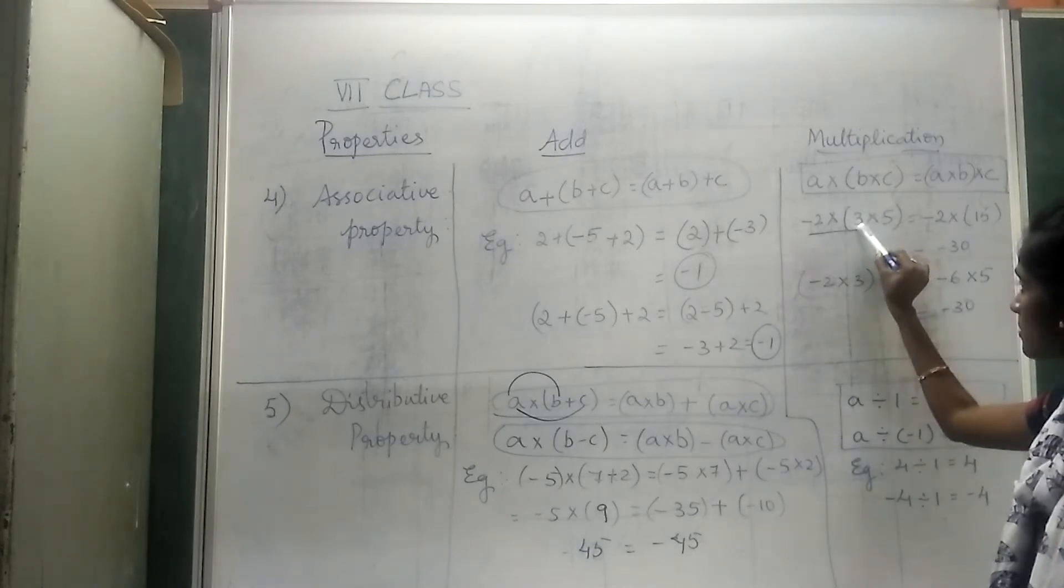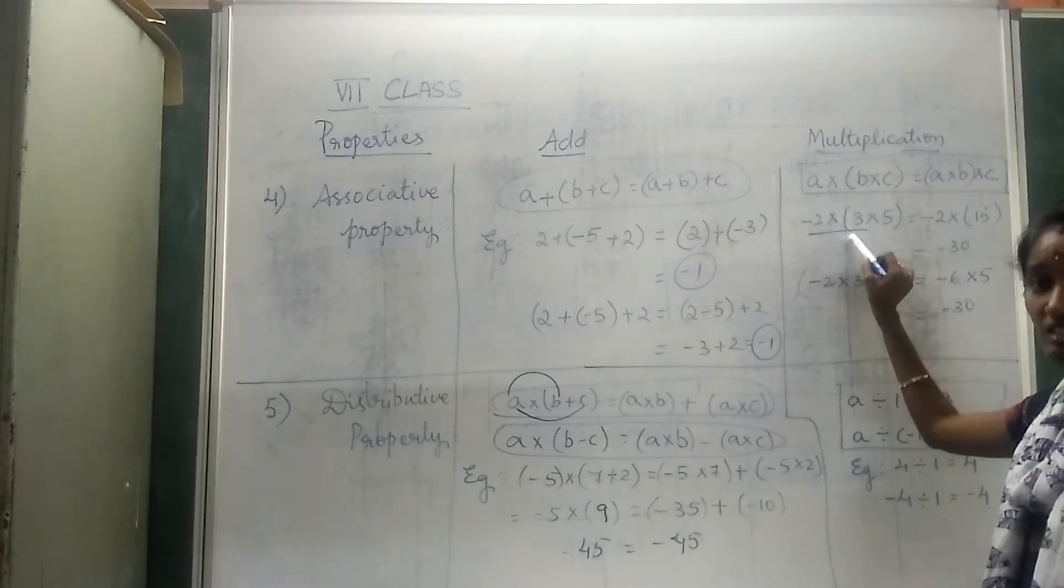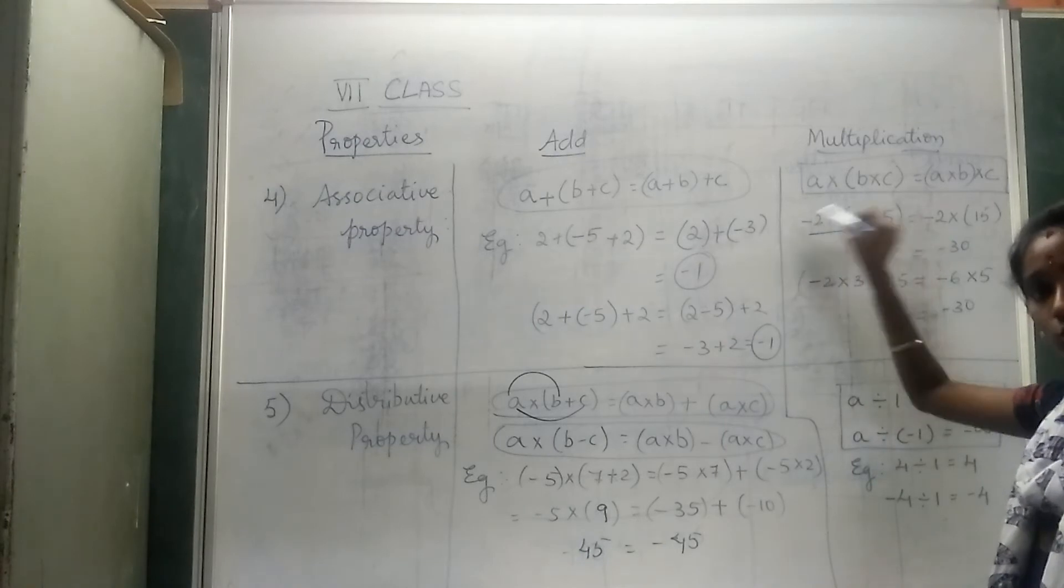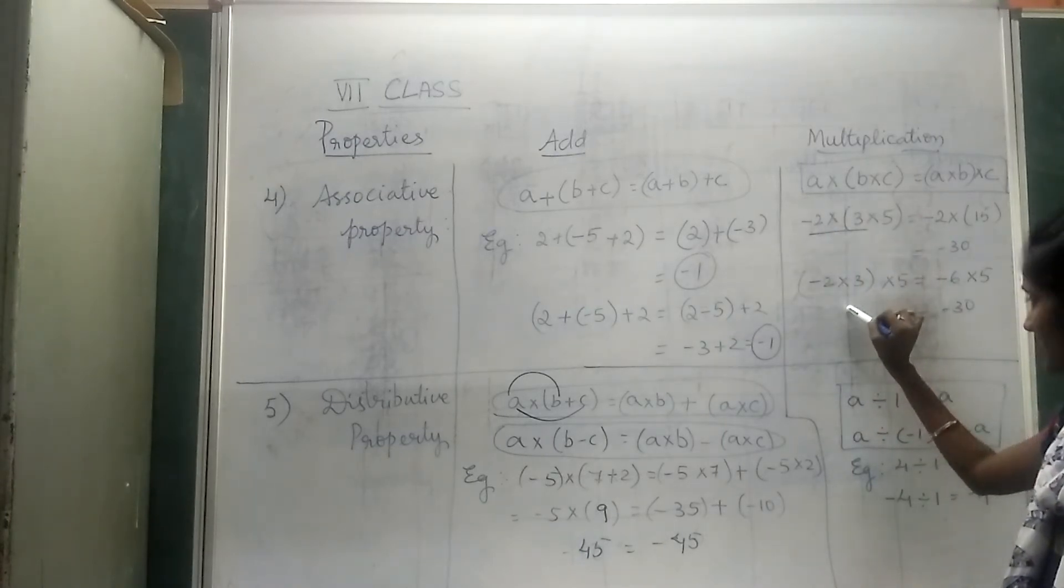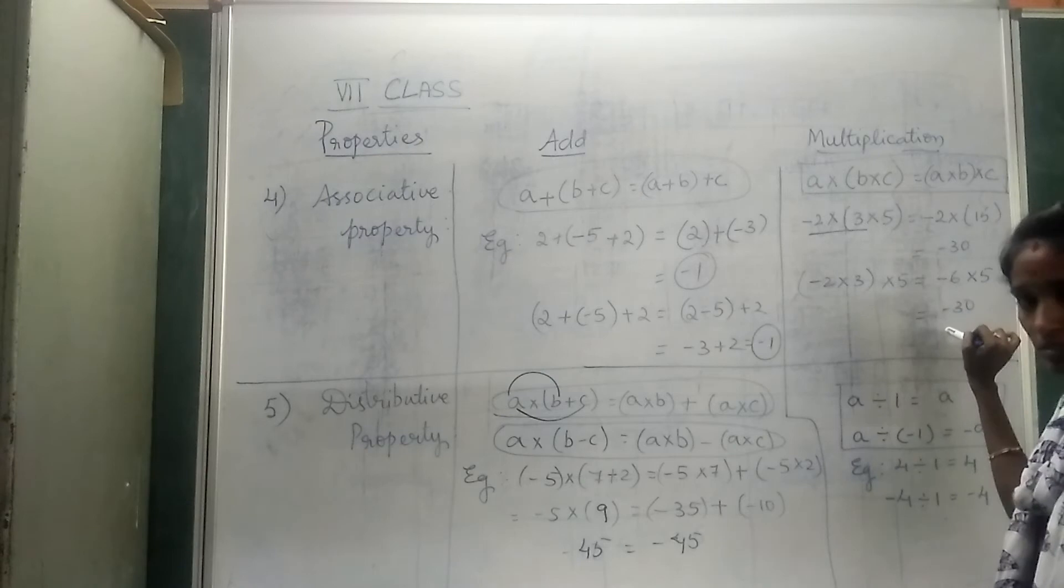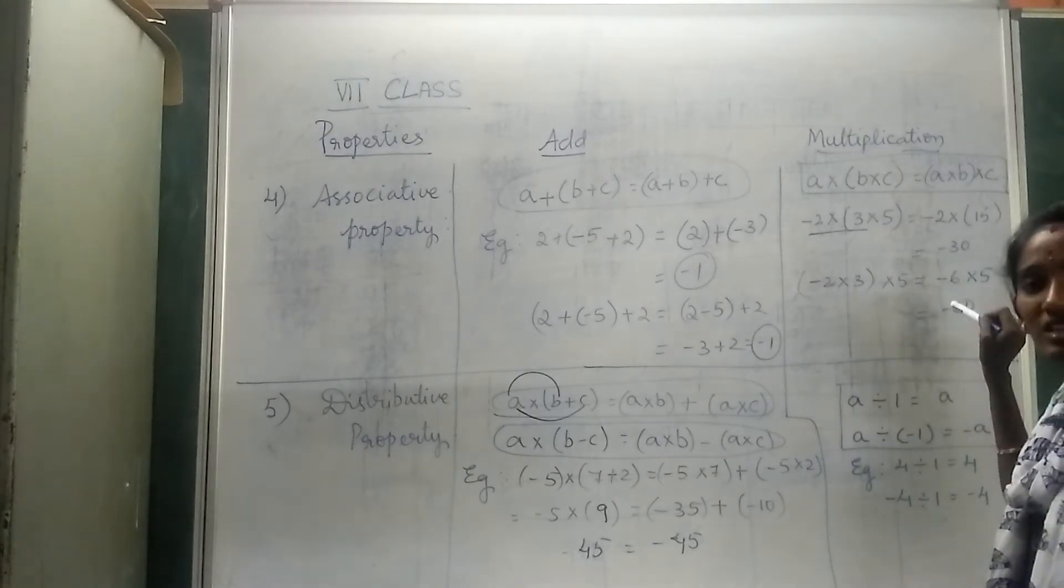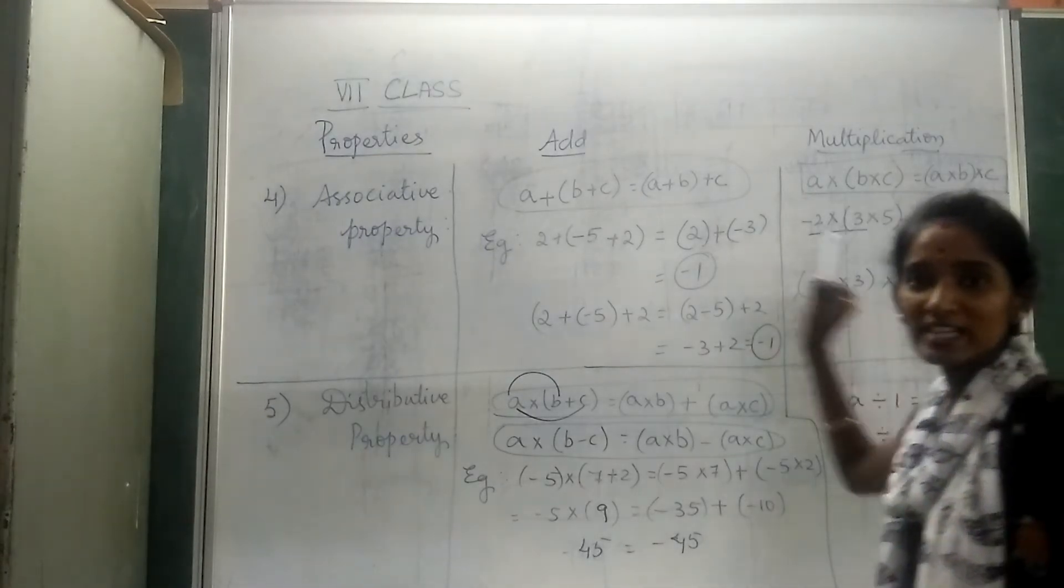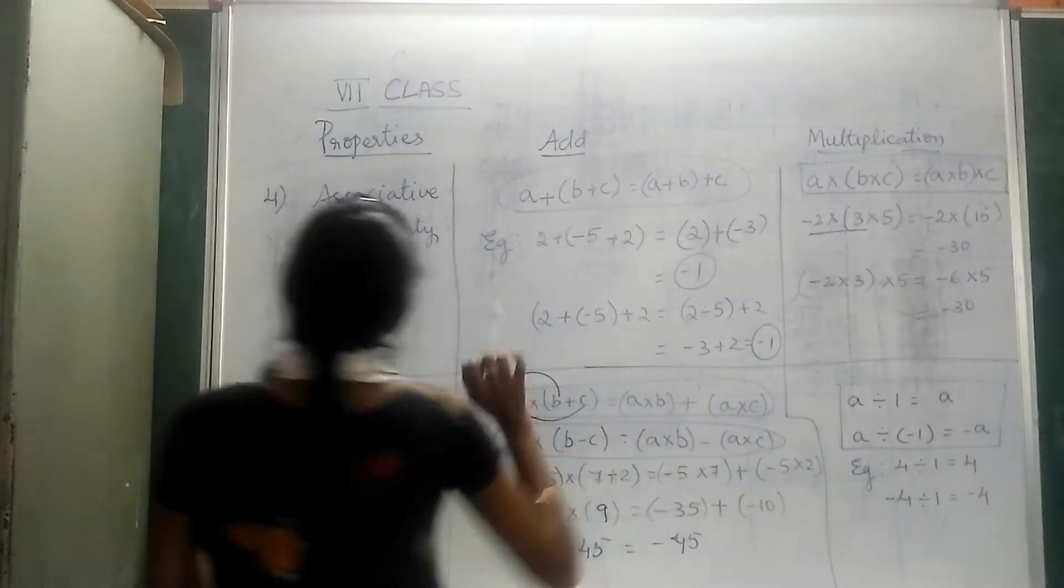Now, I am taking this from outside. It means taking 3 from inside to outside. (-2 × 3) = -6, then -6 × 5 = -30. Here also the answer remains the same. So, this also satisfies the associative property.